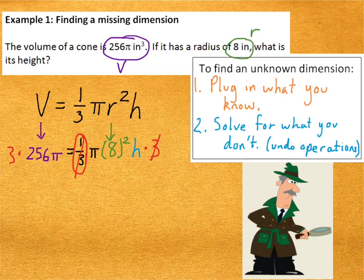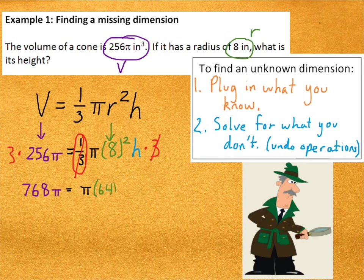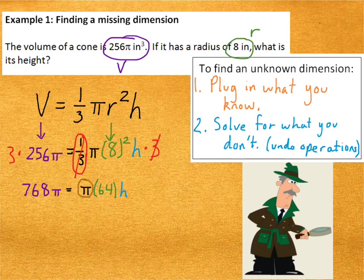Okay, the 1/3 and the 3 will cancel on the right side. So, on the left, I'll have 768π, then the rest of it will remain the same, because the 1/3 and the 3 cancelled. Notice I also changed the 8² into 64 while I'm at it. Okay, so next in line is π. How will I get rid of the π? Well, all of those terms are multiplied here. It's π times 64 times h. So, how do I undo multiplying by π? Well, I divide by π.